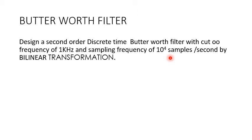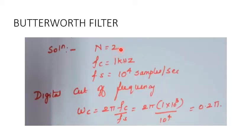To convert from analog to digital, the mapping technique to be used is the bilinear transformation. Now let us calculate the digital cutoff frequency. With fc = 1 kHz and fs = 10^4 samples per second, the digital cutoff frequency is ωc = 2π·fc/fs = 0.2π radians.